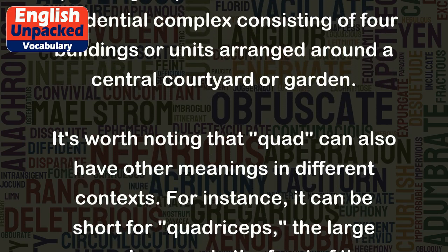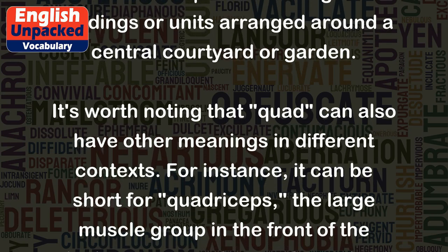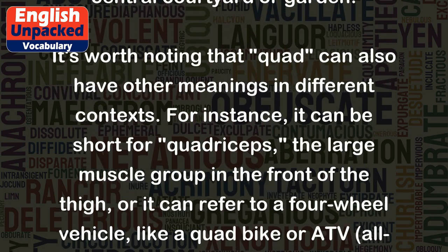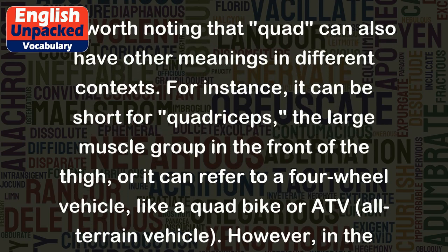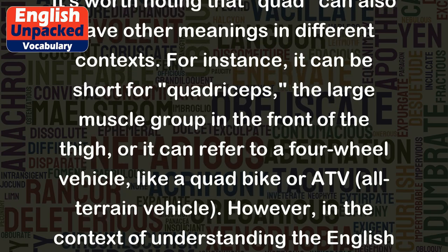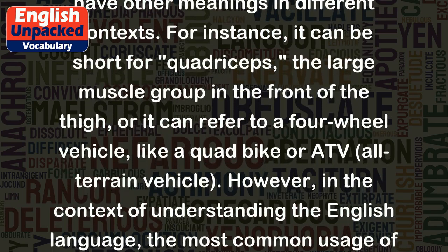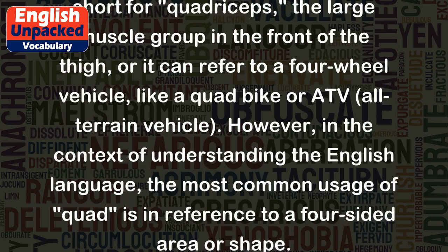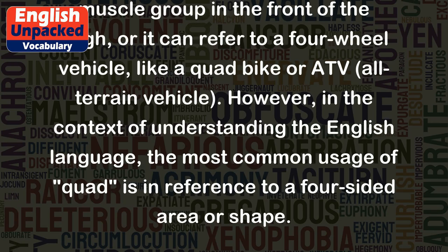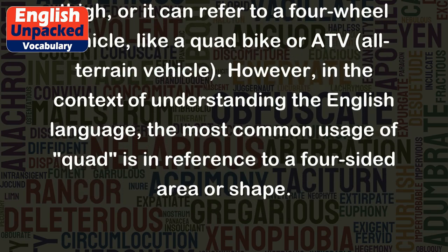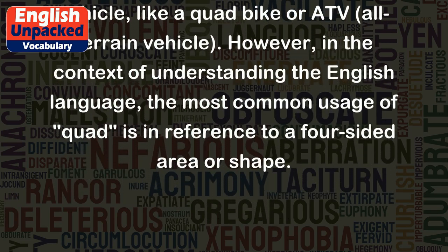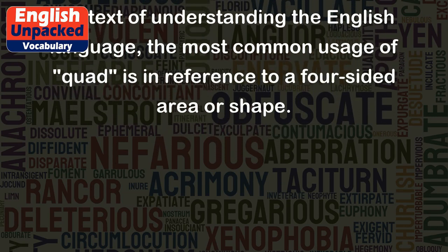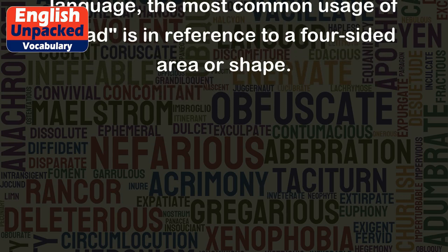It's worth noting that quad can also have other meanings in different contexts. For instance, it can be short for quadriceps, the large muscle group in the front of the thigh, or it can refer to a four-wheel vehicle, like a quad bike or ATV — all-terrain vehicle. However, in the context of understanding the English language, the most common usage of quad is in reference to a four-sided area or shape.